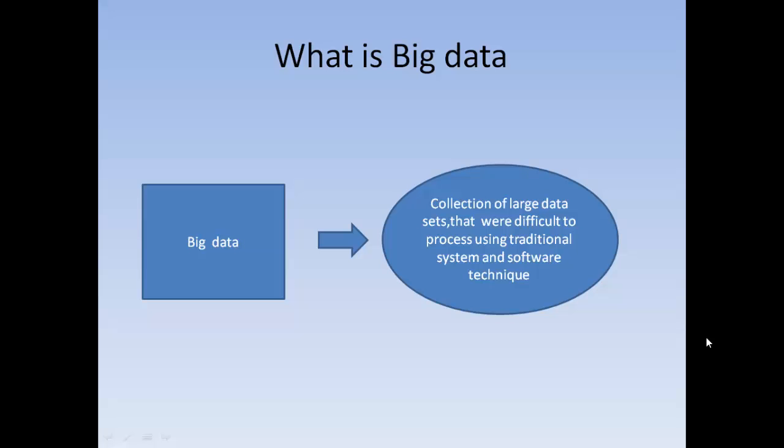Structured data is traditional data, in terms of rows and columns. Unstructured data might be digitized documents, photographs, audio, video, files, tweets, social network posts, email, text messages, and financial transaction records.